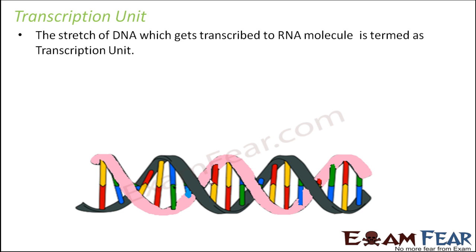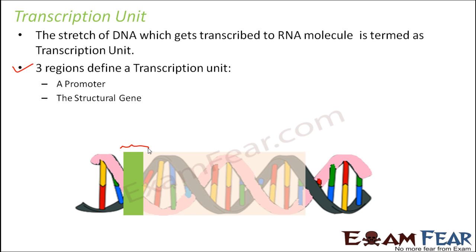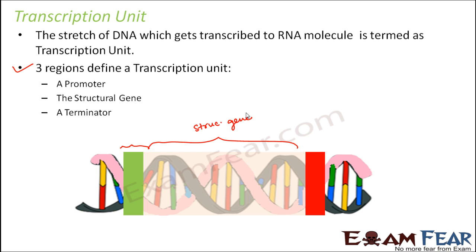The process of transcription takes place only within this portion of the DNA. A transcription unit is divided into three major important regions: the promoter, the structural gene, and the terminator. In the diagram, the green-colored portion represents the promoter, the middle portion represents the structural gene, and the last portion represents the terminator.